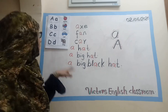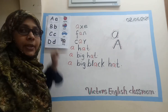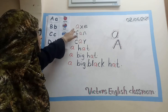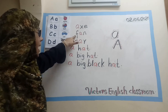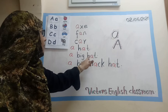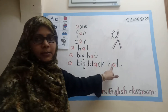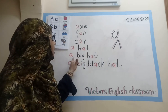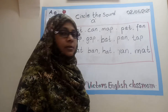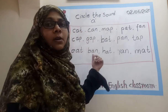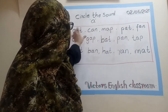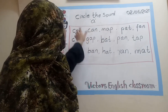Today we learn the letter A. It has a sound: A, A, A. A for apple. Next — ax, pan, car. A hat, a big hat, a big black hat.